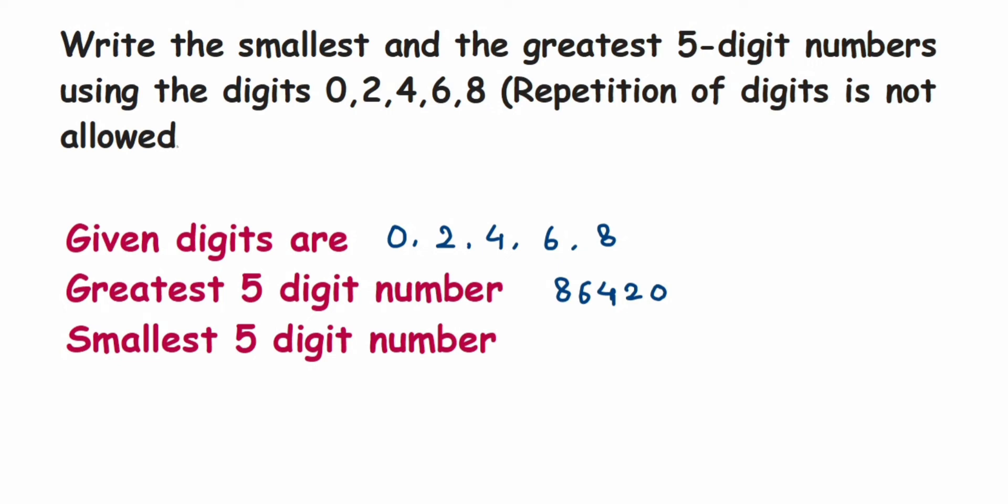When you're writing the smallest digit, it's the opposite. You have to start from the smallest digit given and then proceed further. It's like arranging the numbers in ascending order.